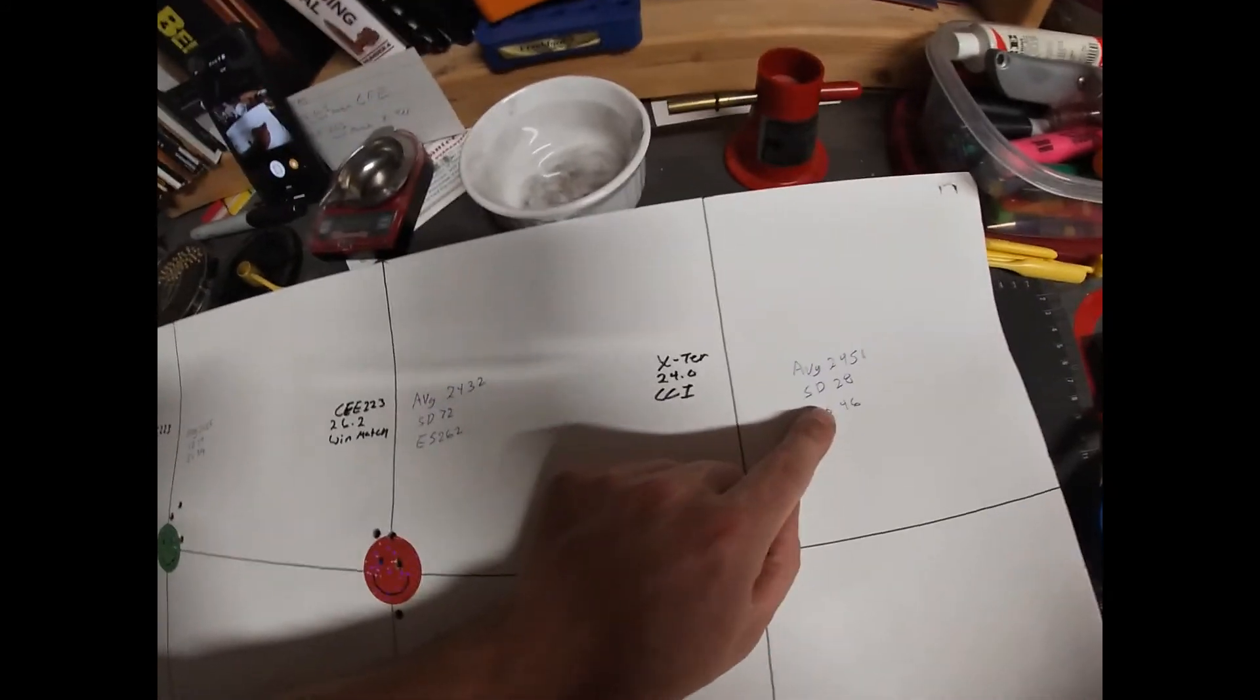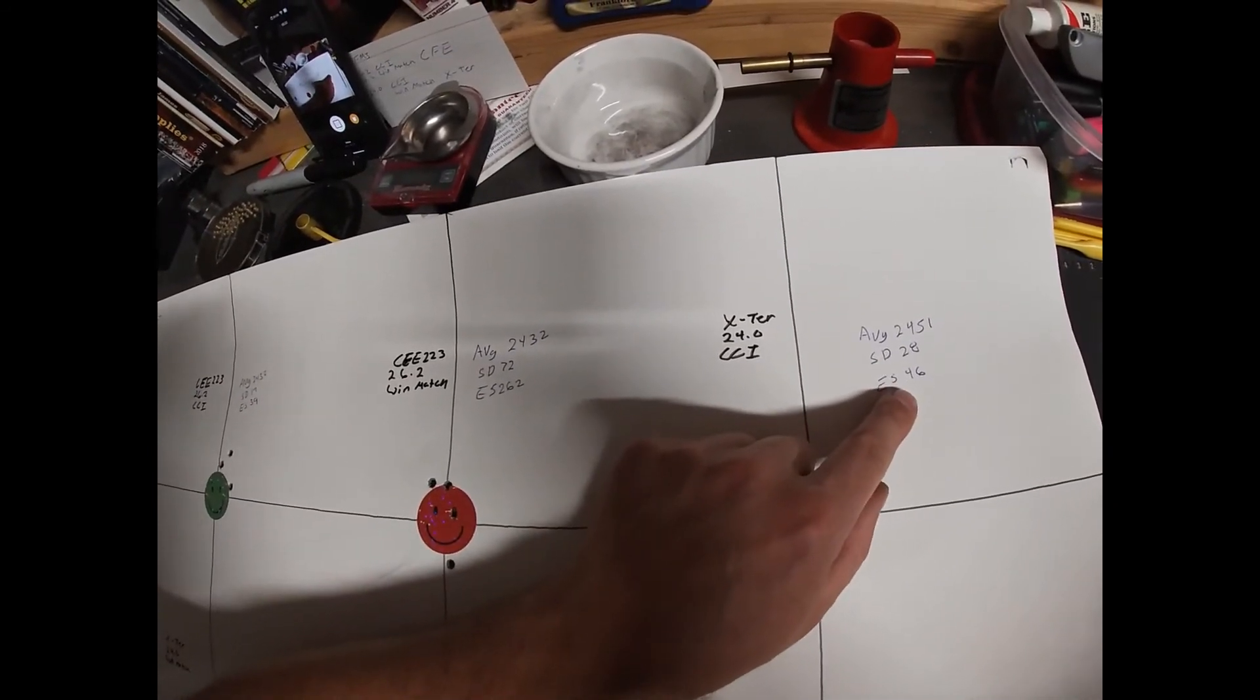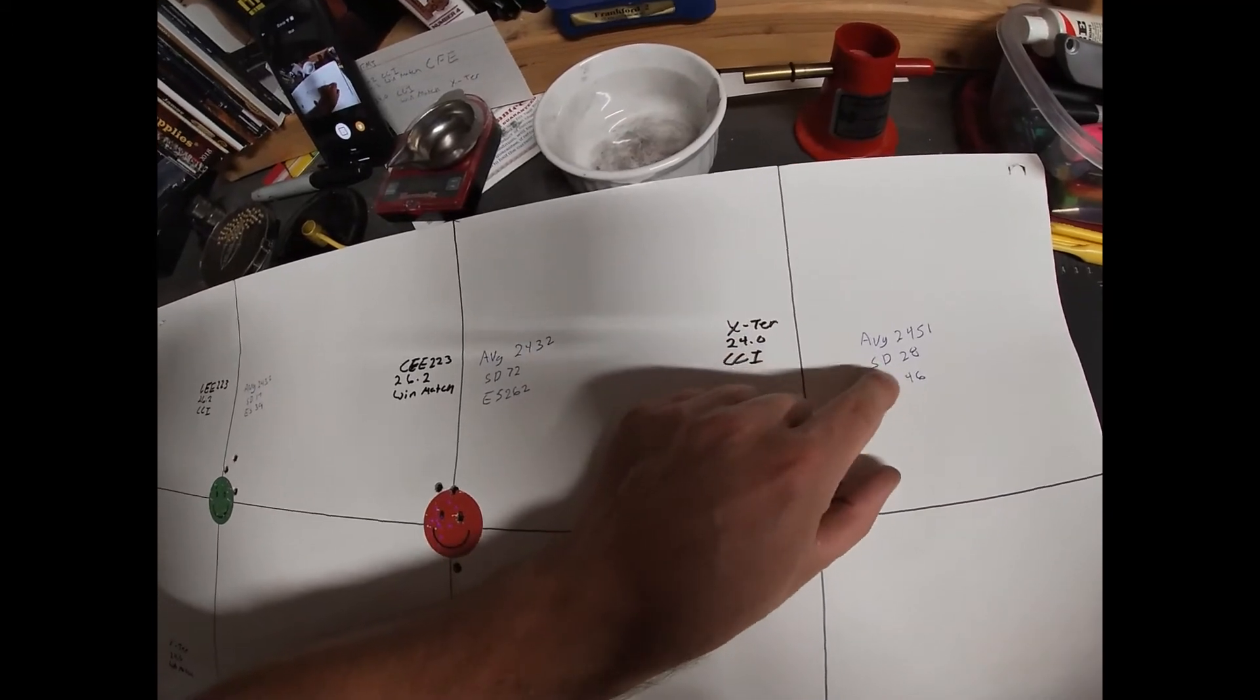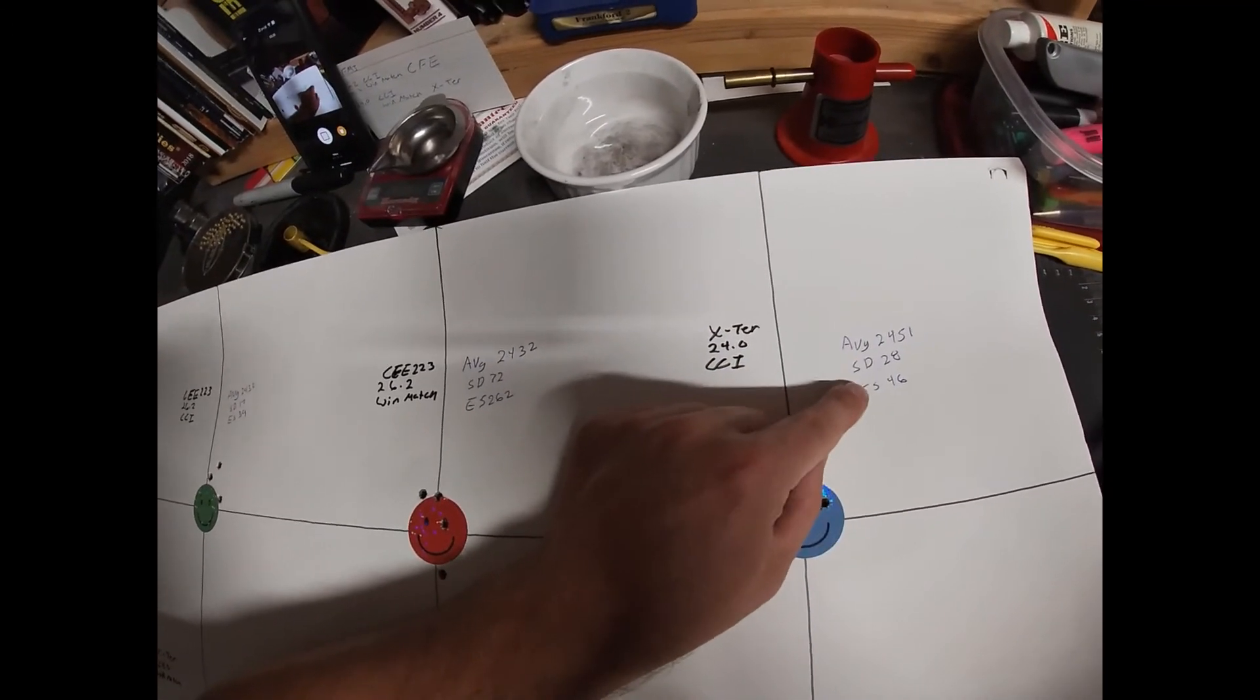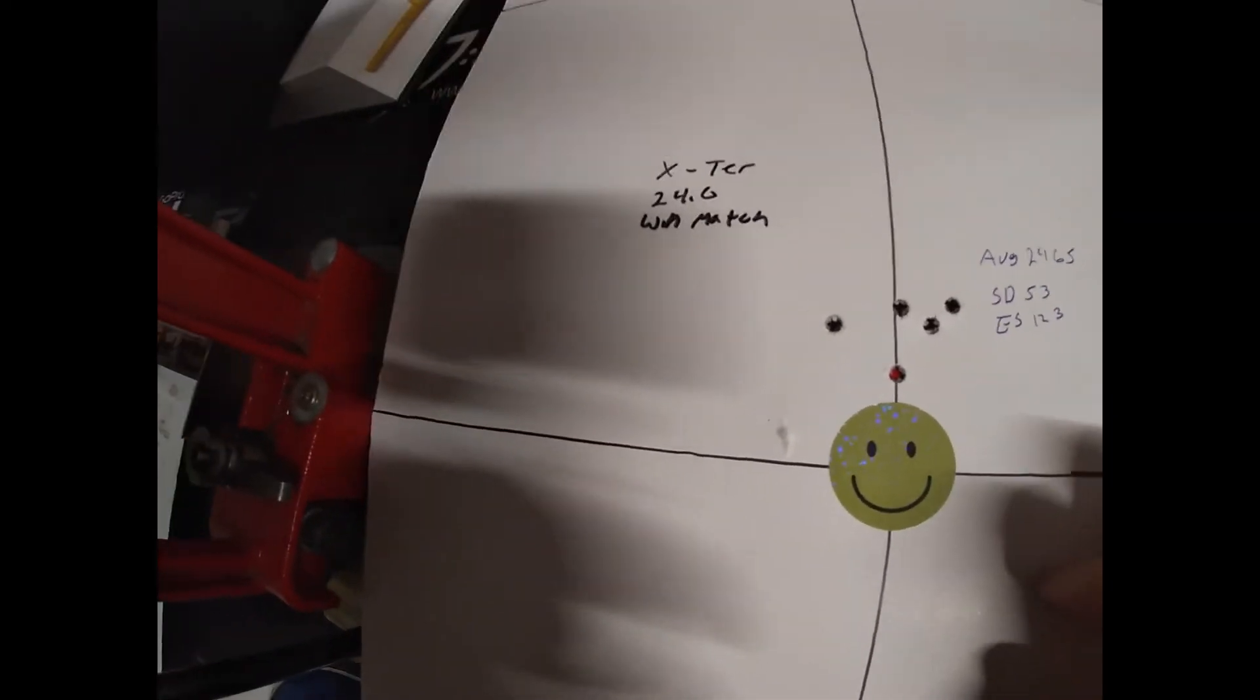Average of 2451 and standard deviation of 28 and extreme spread of 46. So it'd be nice to see maybe those numbers tighten up, but we'll see. I think I'm definitely going to be doing another video on this.